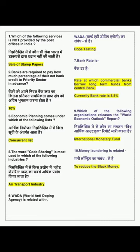Banks are required to pay how much percentage of their net bank credit to priority sector in advance? Banko ko apne nival bank rin ka kitna pratishat prathmikta prapt kshetra ko agrim bhuktaan karna hota hai? Answer: 10%.